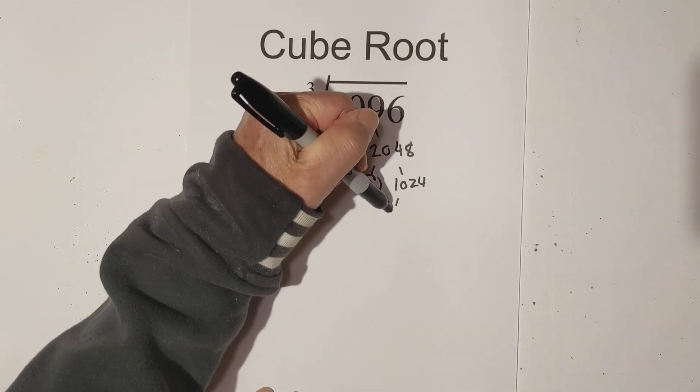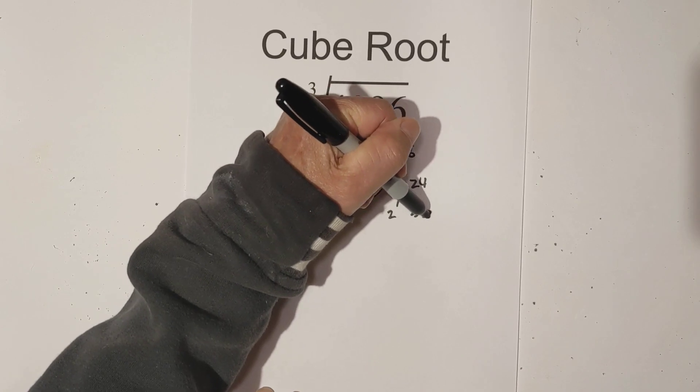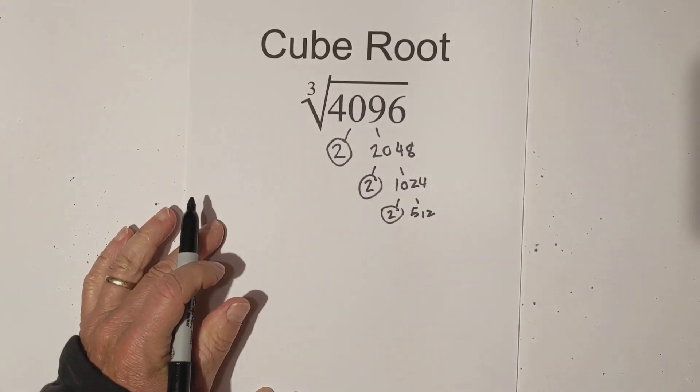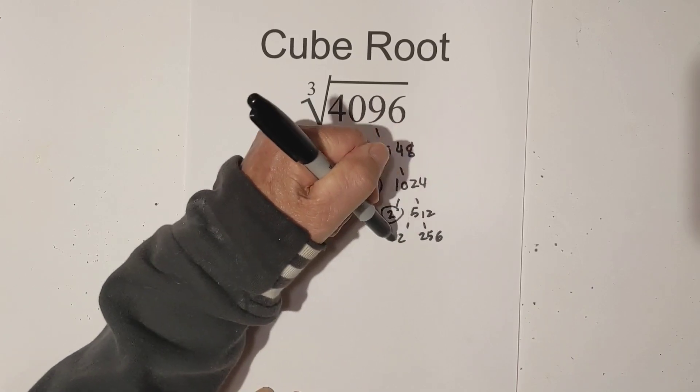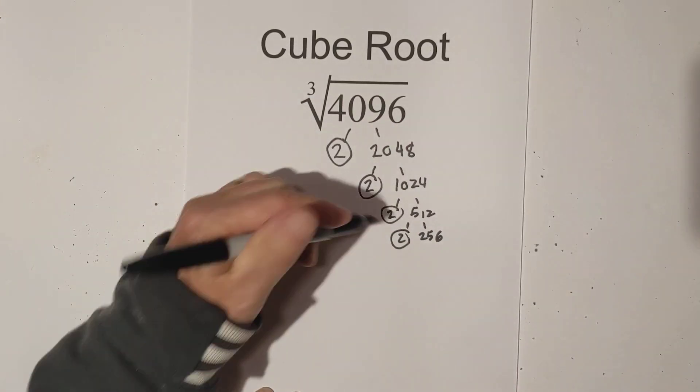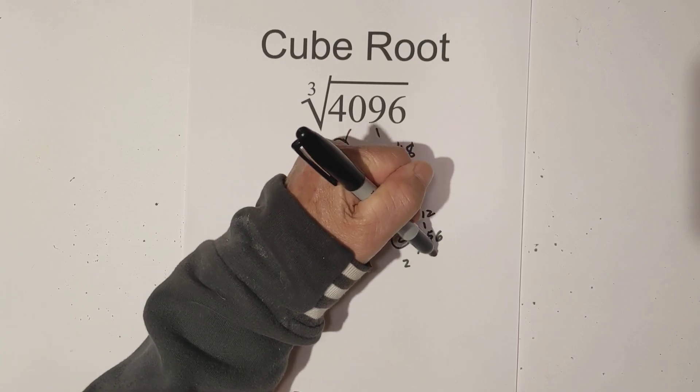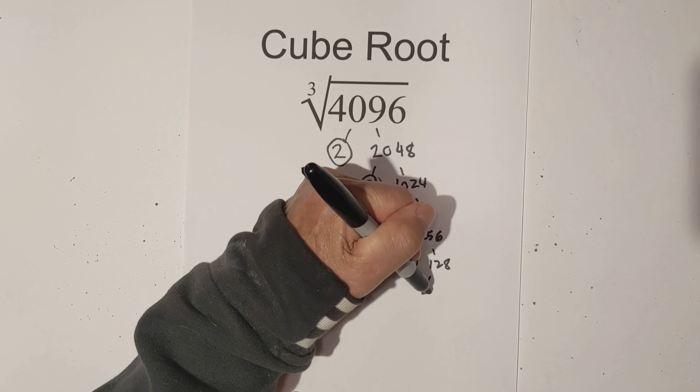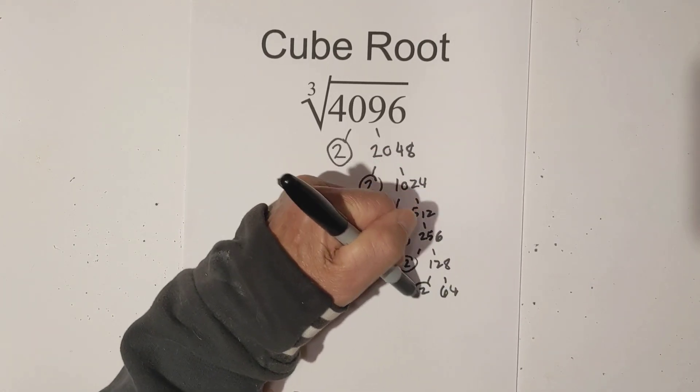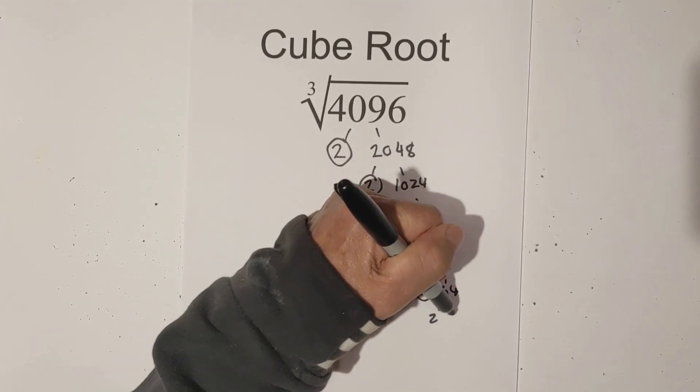Circle the 2. Like I said, this is a doozy. 2 times 512. Circle the 2 because it's prime. Now let's go 2 times 256. I'm going to circle that prime. Then how about 2 times 128?